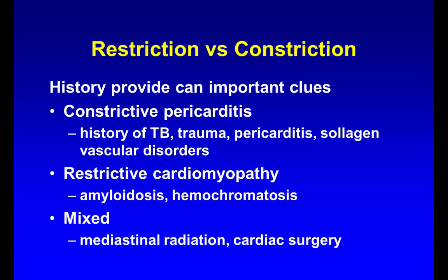Restrictive cardiomyopathy versus constrictive pericarditis: even though the manifestations are exactly the same, patients with constrictive pericarditis tend to have a history of tuberculosis or prior pericarditis, whereas in restrictive cardiomyopathy think about collagen vascular diseases, radiation therapy, or cardiac surgery.